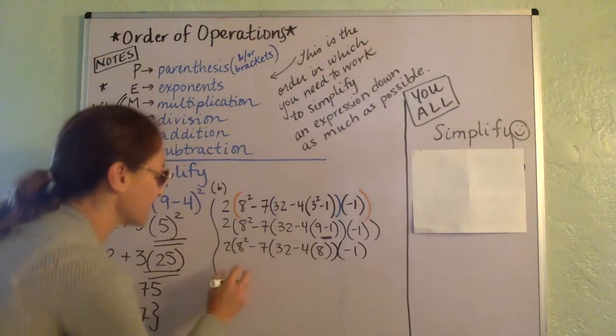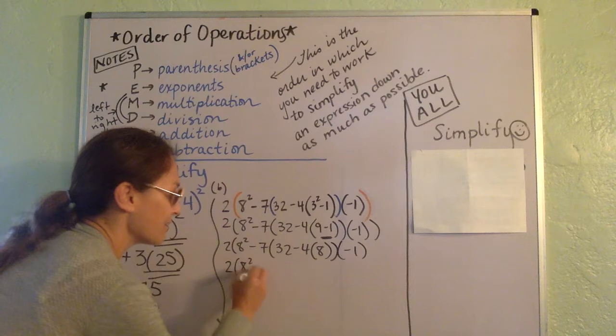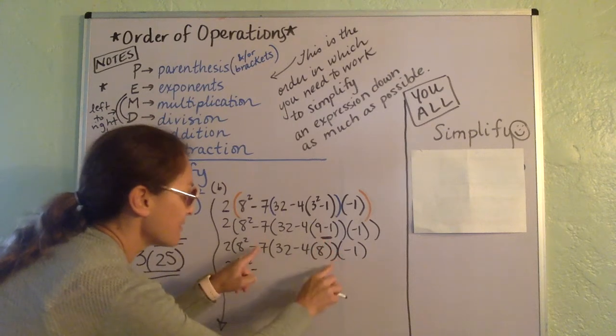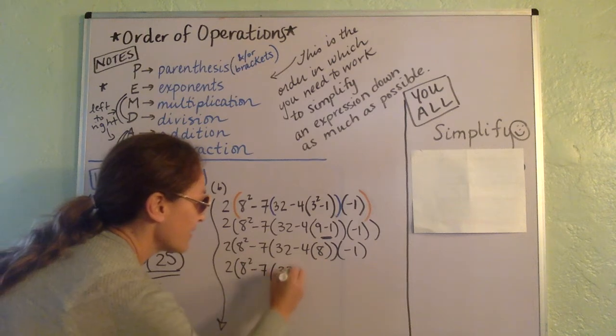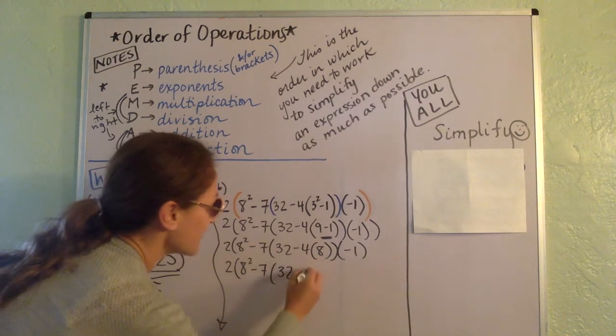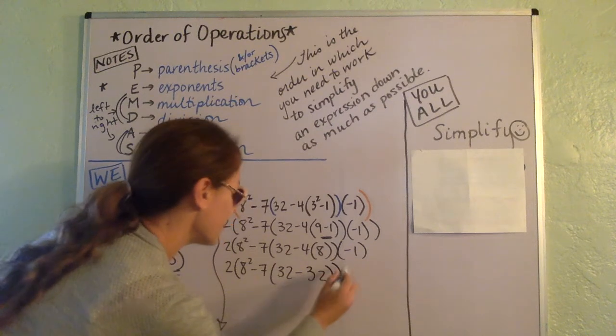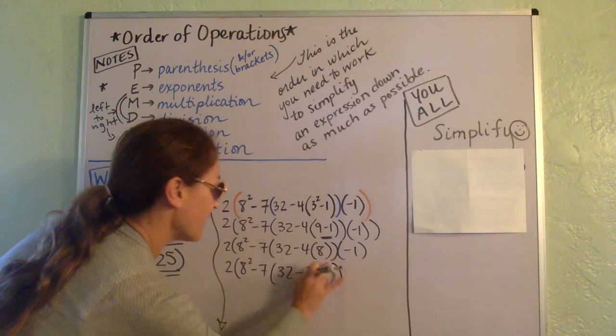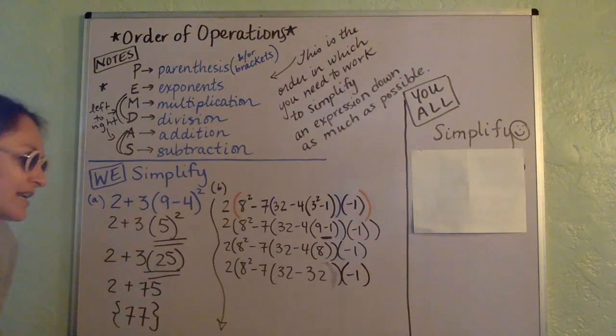Now over here, let's see. So we have 2, we've got 8 squared minus. Now we have this parentheses. Within that, we have this going on. So that's 7, this multiplication here. That's 32 minus 4 times 8 is 32. Close, close. Oh, I'm sorry. Now that one's taken care of. And then times negative 1.